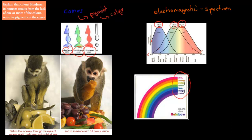We can see red, orange, yellow, green, blue, indigo, and violet because of these three cones. We don't have cones for each color, but these three cones allow us to see all these different colors. But some people have something called color blindness.